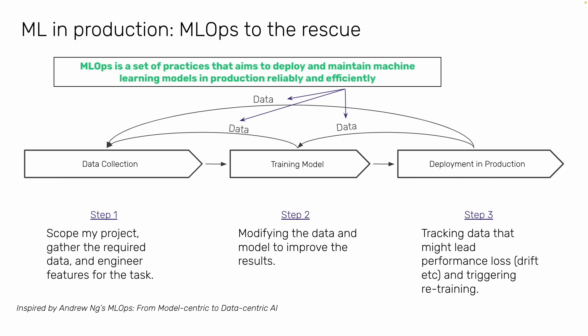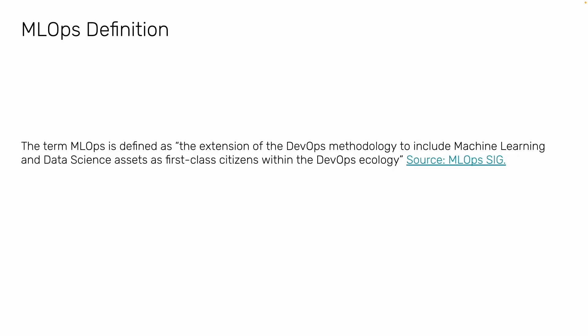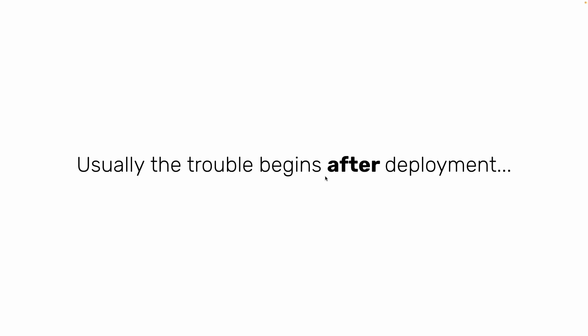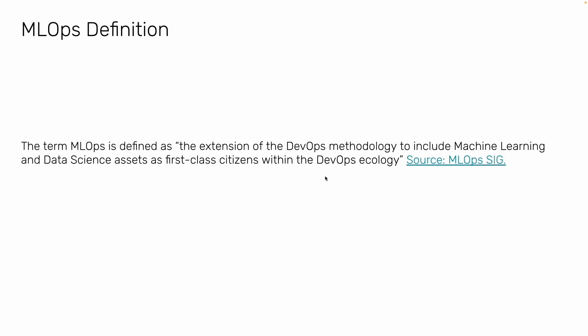MLOps is a set of practices — it is not some library or tool. It is a set of practices that aims to deploy and maintain machine learning models in production reliably and efficiently. If anything changes in the data, it retrains the model; if assumptions are violated, it goes back. We have to make it reliable and productionized at a large scale. MLOps is like the extension of the DevOps methodology to include machine learning and data science assets as first-class citizens within the DevOps ecology.